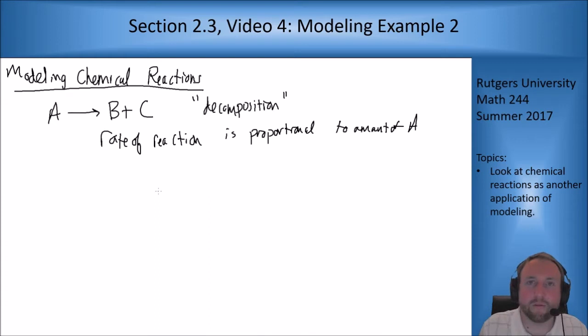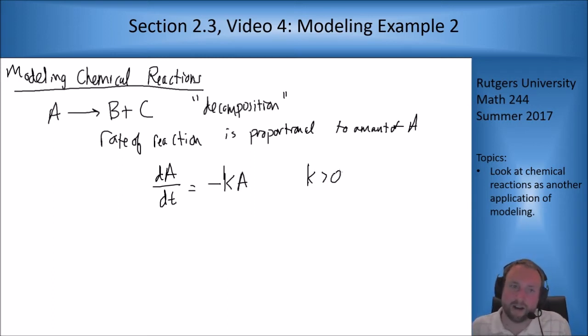then what you would get for a model for that is the change in A over time is negative rate constant times the amount of A. We're assuming our rate constant K is positive by convenience. Since A is being removed by this reaction, it has a negative sign. So the change in A is just minus K times A. That's the simplest model possible.